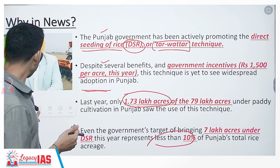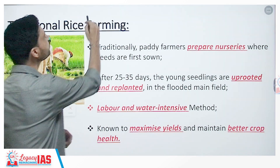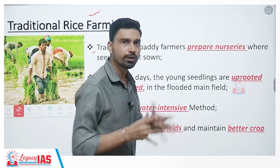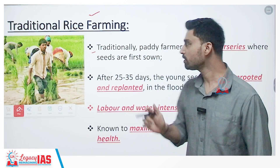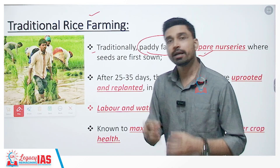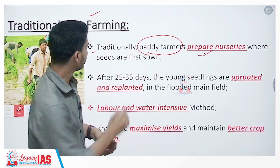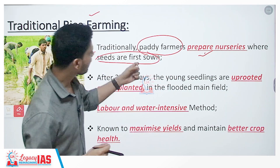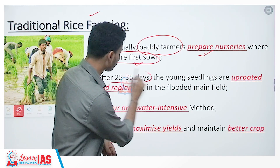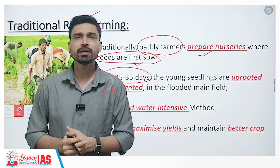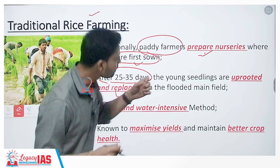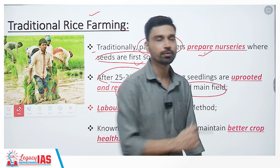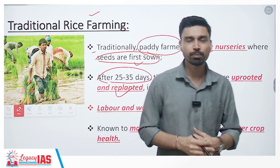Let us understand the traditional method of rice cultivation, which is largely used everywhere in India. It happens in two stages. In the first stage, paddy farmers prepare nurseries where rice seeds are sown and allowed to grow for a short period. Once the rice crop has grown to a certain extent, roughly after a month, the young seedlings are uprooted and replantation is done in the main field where rice is to be cultivated — a field flooded by water.